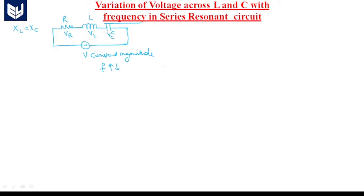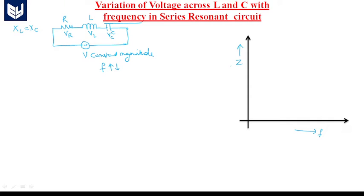Let us initially consider the variation of impedance and current with respect to frequency. Taking the x-axis as frequency and y-axis as impedance and current: if you draw the plot between frequency and impedance in a series resonant circuit, you get a curve where initially the impedance is at an infinite point, then it slowly decreases to a minimum, and then increases again.